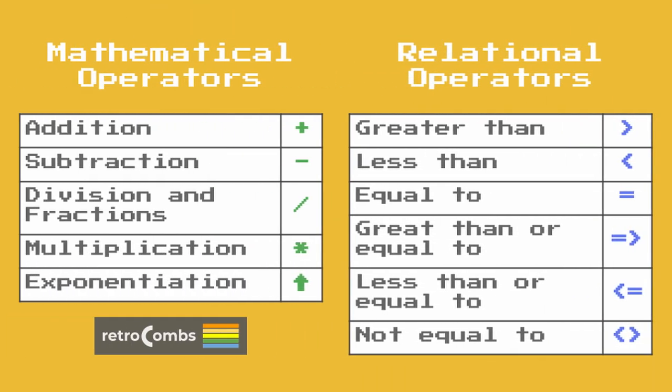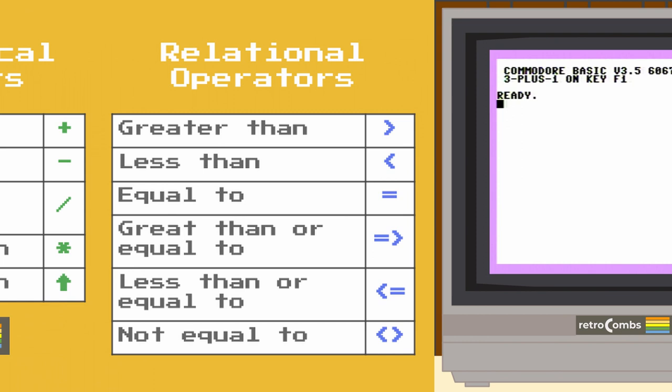There are two types of operators you'll find when working in Commodore Basic and most computers: mathematical operators and relational operators. We're going to be looking at mathematical operators in this chapter. We'll look at relational operators — how things relate to each other — in a programming chapter later on.